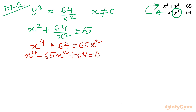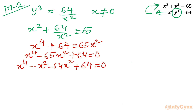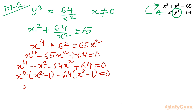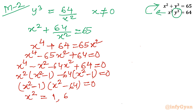Using factorization, I split the central term: x to the power 4 minus x squared minus 64x squared plus 64 equals 0. Taking x squared common gives x squared times (x squared minus 1), and taking minus 64 common gives minus 64 times (x squared minus 1) equals 0. After taking (x squared minus 1) common: (x squared minus 1)(x squared minus 64) equals 0. So x squared equals 1 and x squared equals 64.